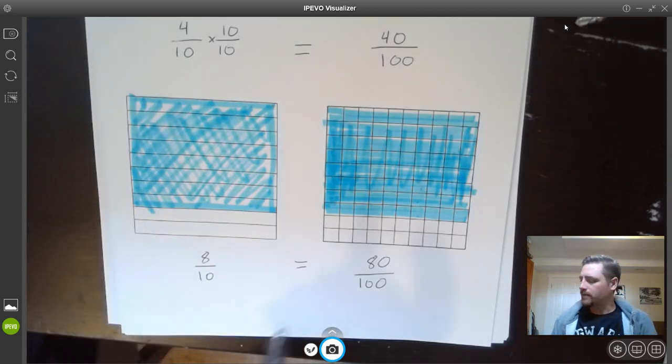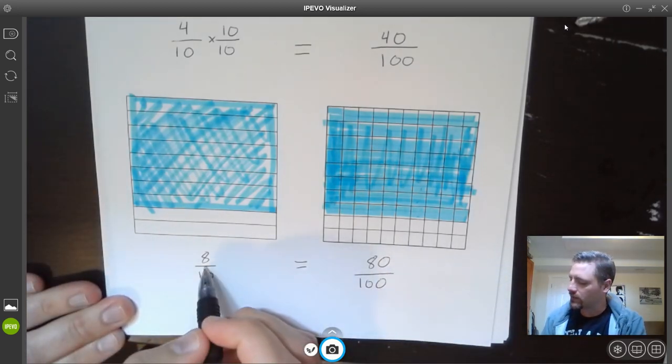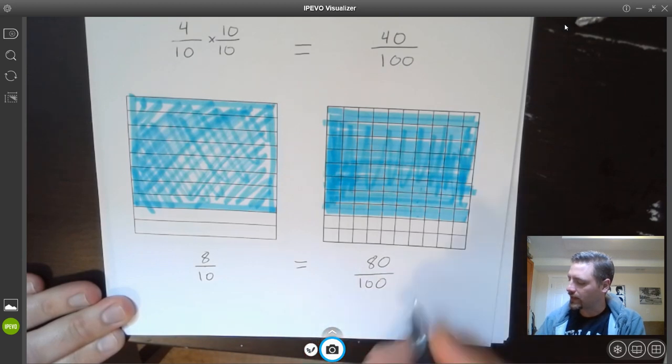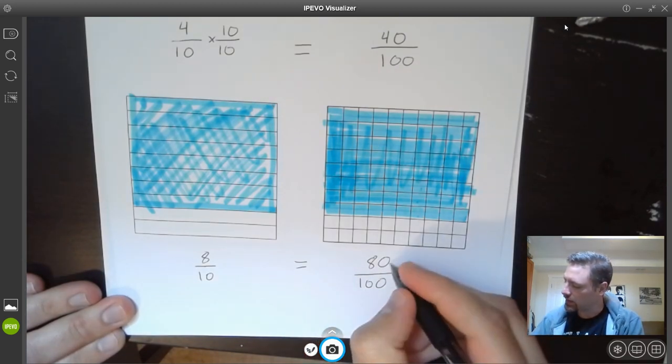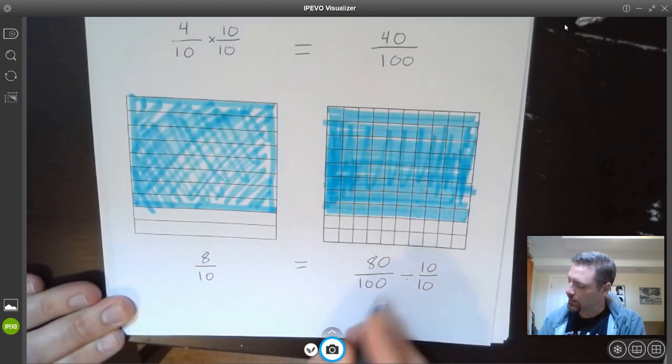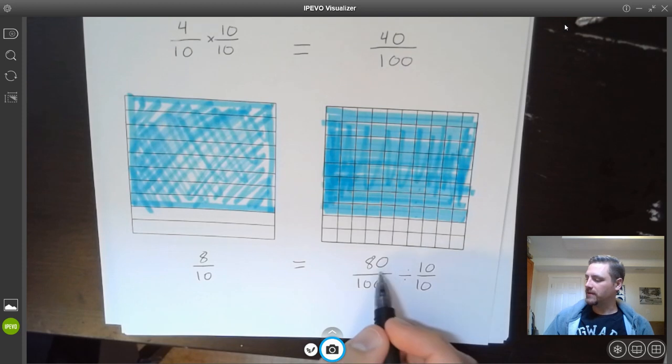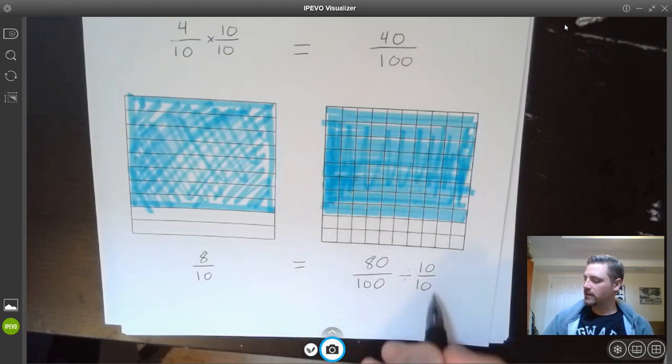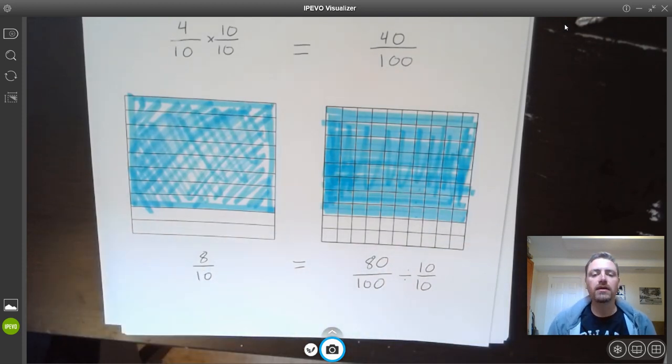So again, this time, if we're going from hundredths to tenths, we're dividing. So we would do 80 one-hundredths divided by 10 equals 8 tenths, because 80 divided by 10 is 8, and 100 divided by 10 would be 10. So that's one way to figure out equivalent fractions.